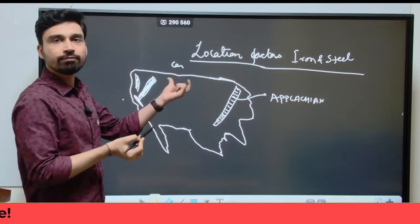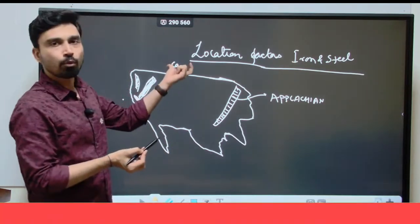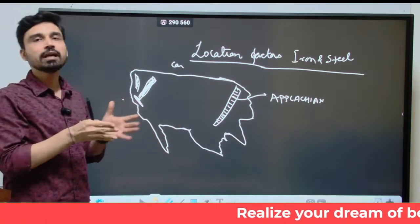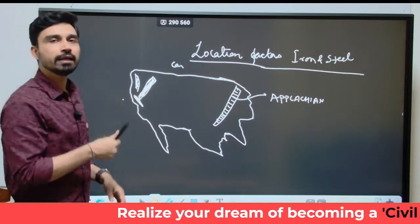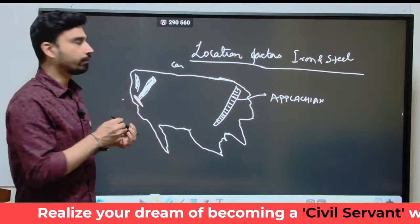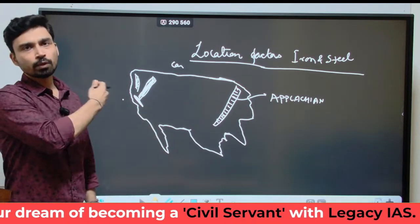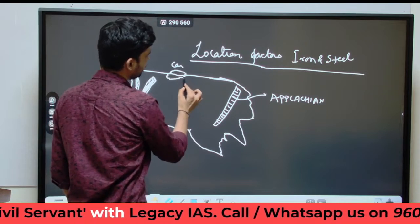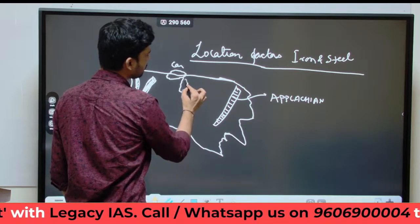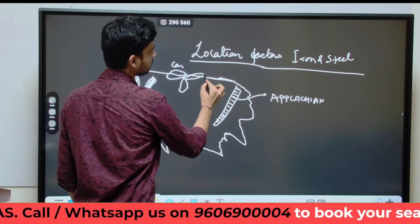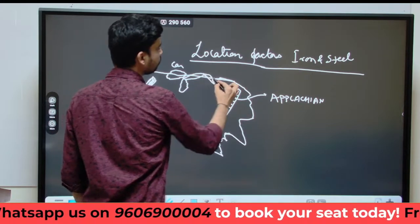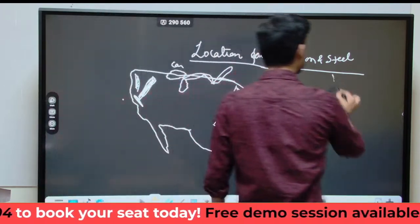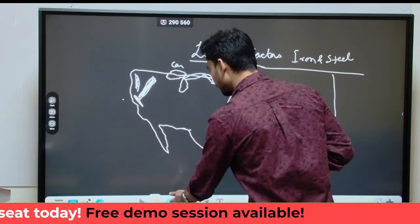If you look at the northern part of USA, we have the bordering region with Canada, and here we have several lakes which are collectively called the Great Lakes. Overall, 5 lakes can be identified. Coming from west to east, we have the first lake, then one lake going slightly to the south, then the third, fourth, and fifth lake.